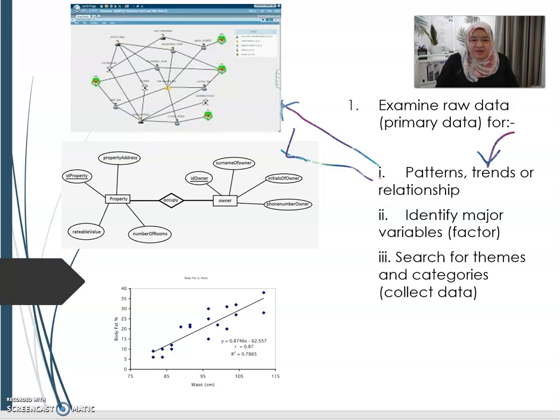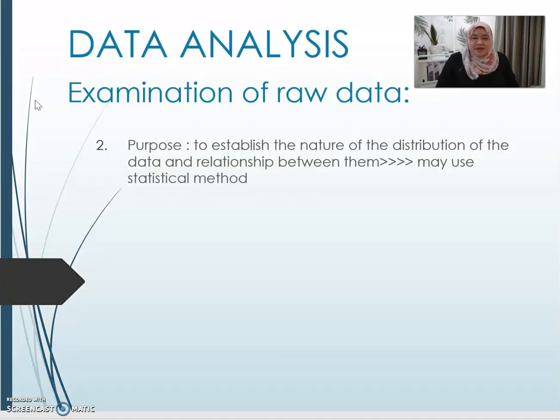For example, here we have a property. What are the property's major factors? And search for themes and categories, and also looking at the distribution of data to establish nature of distribution of the data and relationship between them. This can be adopted using a statistic method.